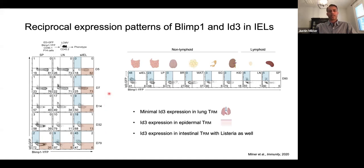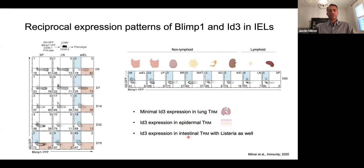One interesting thing to note is that the increase in frequency of ID3-high cells seems to be unique to TRM or at least the intestine, because we didn't detect a similar increase in the lymph node or the spleen. We next evaluated other non-lymphoid sites — the small intestine IEL and lamina propria both showed an ID3-high population at 90 days post-infection. However, when we profiled the brain, white adipose tissue, salivary gland, and kidney, we found little to no ID3-high expressing cells. In an intranasal infection model, we found minimal ID3 expression in lung TRM, but did detect an ID3-high population in epidermal TRM. There seems to be something unique about the skin and small intestine allowing upregulation or expansion of this ID3-high population. These results were also validated in a localized enteric Listeria infection model.